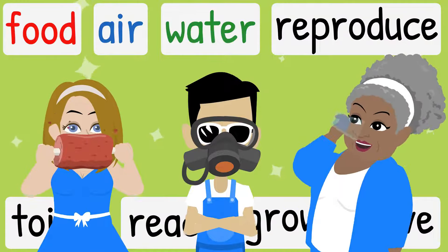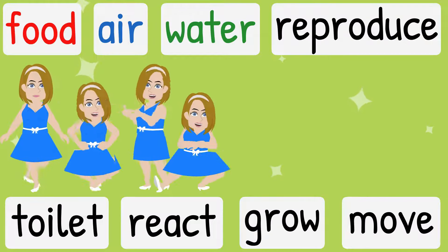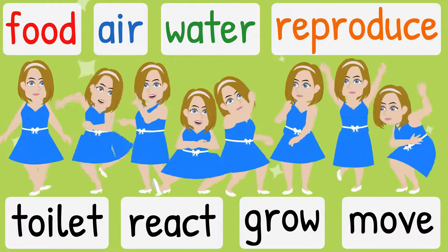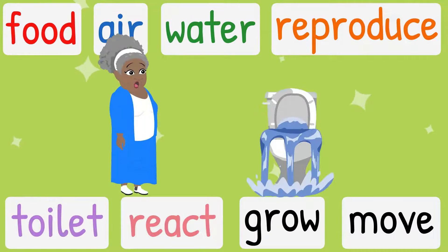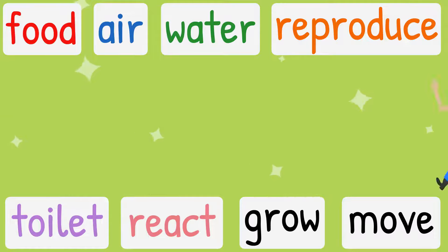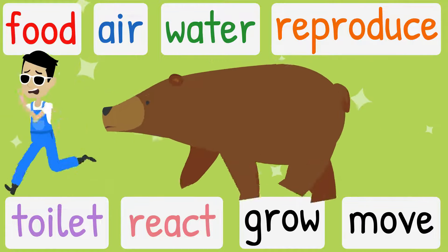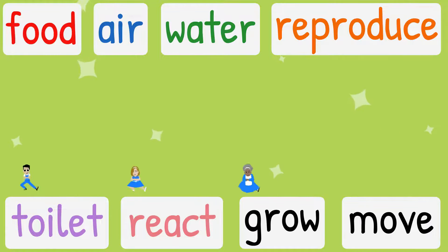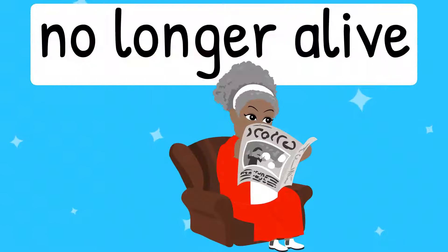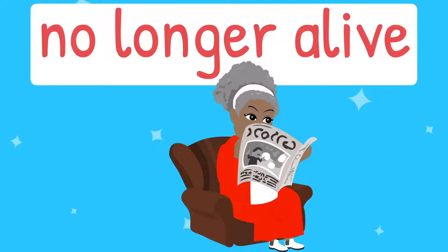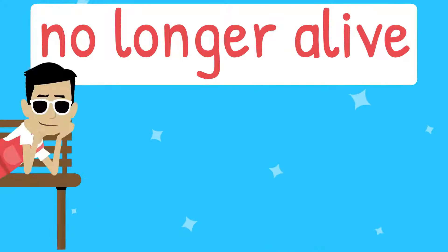All the human beings are living. Living things need food, air and water. Living things can reproduce and go to toilet. Living things react to their surroundings, living things can grow and move.